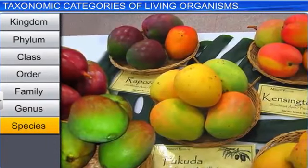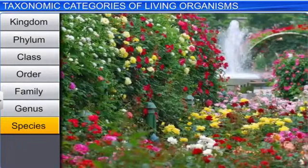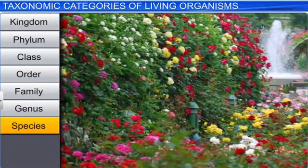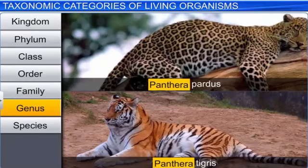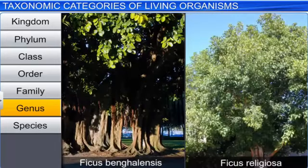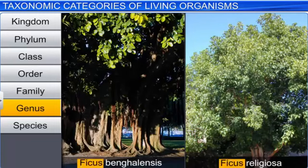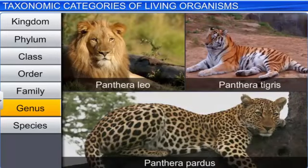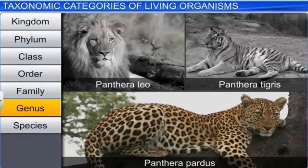Think of the varieties of mangoes available in the market, or the different species of rose in the garden. The next rank is genus, which consists of a group of related species that exhibit similar characteristics in comparison to species of other genera. In case of plants, the banyan and peepal trees have certain similarities and therefore belong to the genus Ficus. Among animals, the lion, the tiger, and the leopard are closely linked and thus are in the genus Panthera.